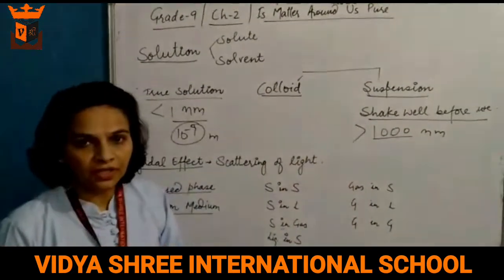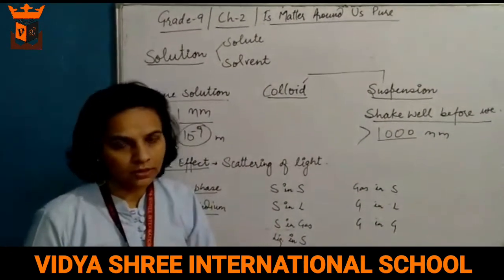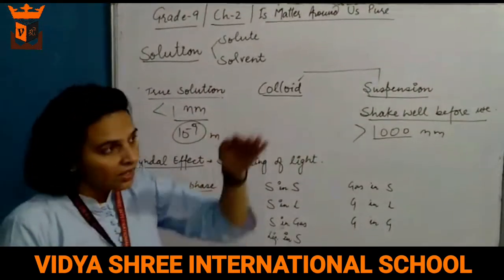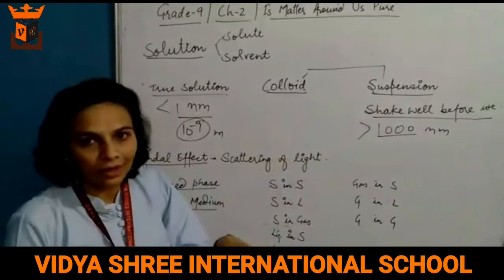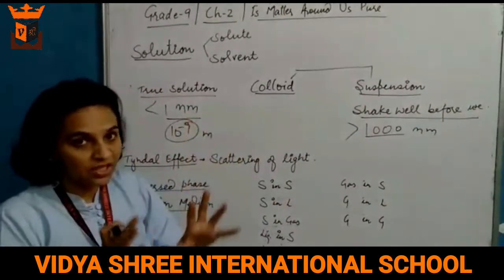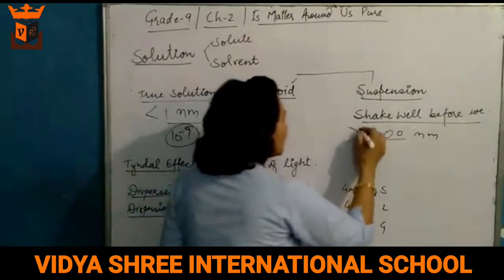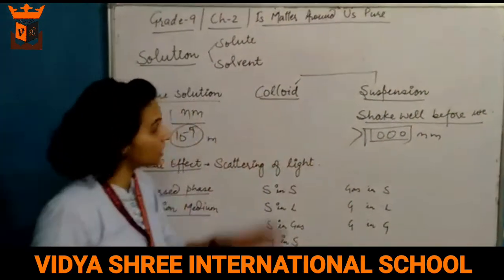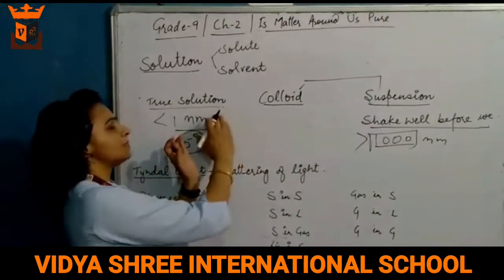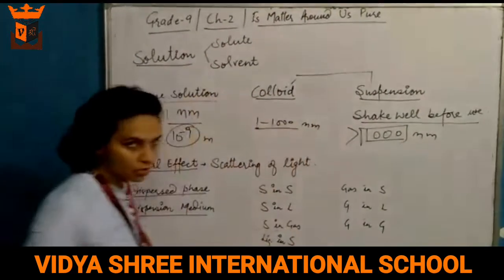You have seen many cough syrups and juice packs — it is written on them: 'shake well before use.' Because if you do not shake, the heavy particles settle down and the lighter solvent comes up, making the mixture heterogeneous. In suspension, the particle size is so large that the particles do not mix with each other. The particle size between true solution and suspension — that is 1 to 1000 nanometers — is called a colloid.